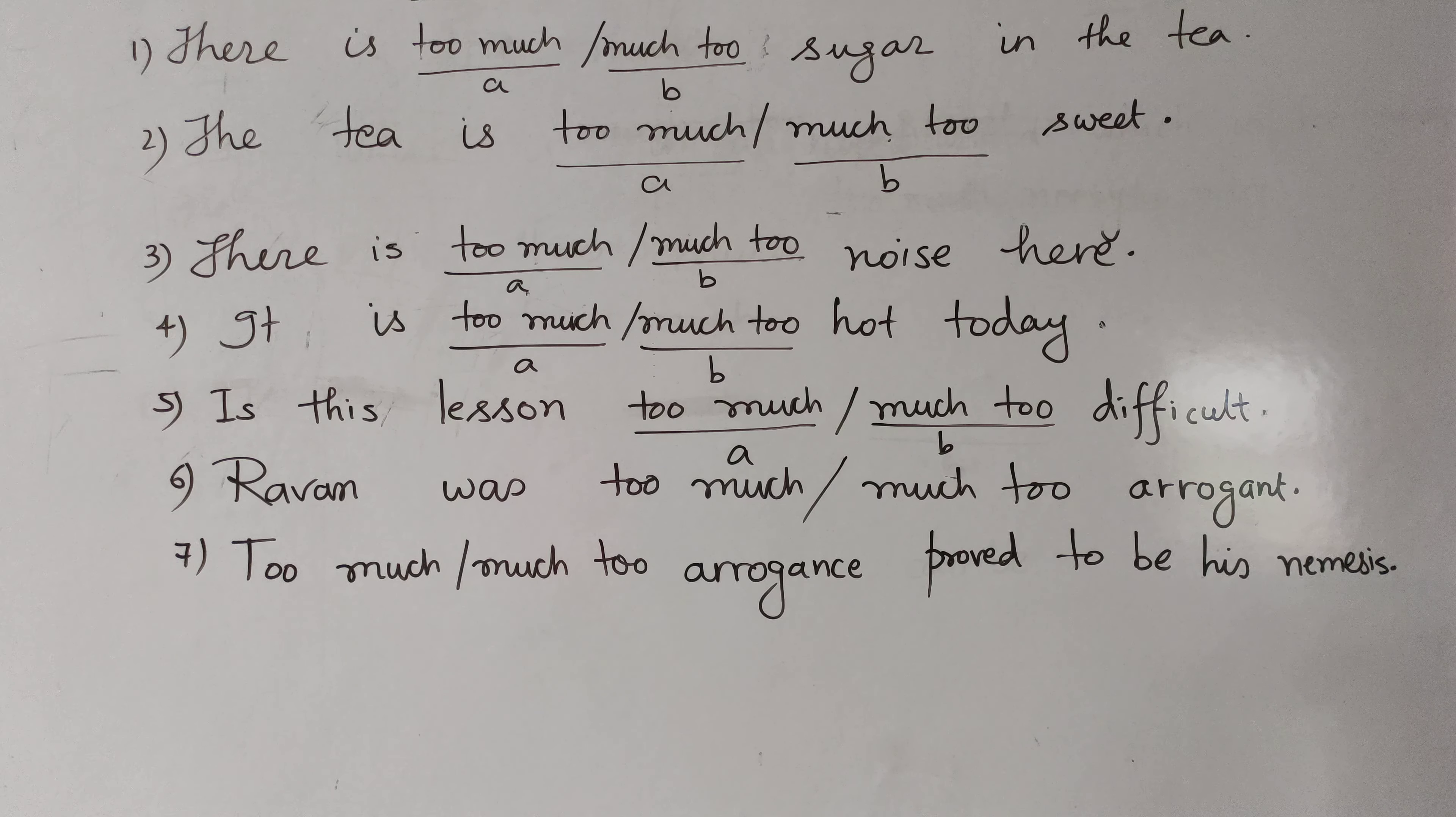Nemesis means something that becomes the reason of your fall. Something that proves you to be a failure. Alright? Something that becomes the reason of your death. Nemesis. It's like an opponent that is difficult to defeat. There are many meanings of nemesis. Here you would say, it became the reason of his fall, the reason of his failure. What? Too much arrogance. A. Now, have you understood? Where do you use too much and where do you use much too?